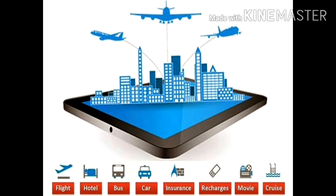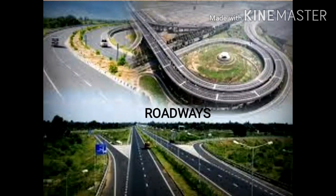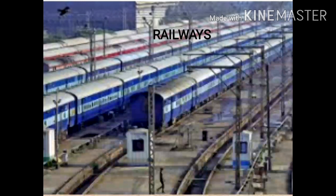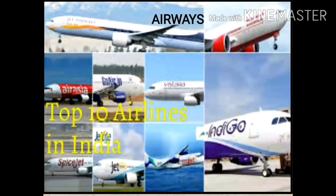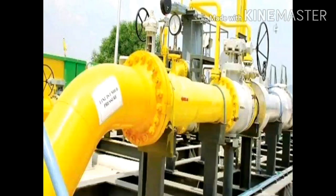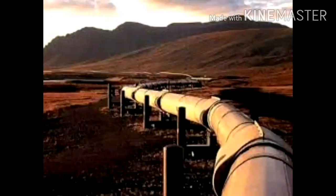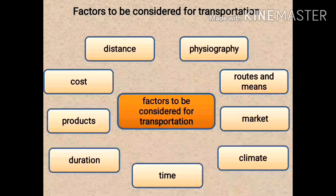Through these examples we have understood that according to the condition, we can choose our mode of transport. While traveling or transporting goods we have to consider many things, as shown by the examples. If there are many ways and means of transport available, we can think about alternatives: roadways, railways, waterways, airways, and pipelines. Now let us learn the factors we should keep in mind while selecting routes and means of transport.